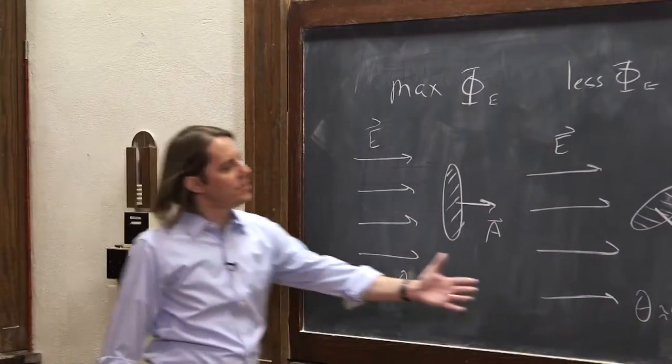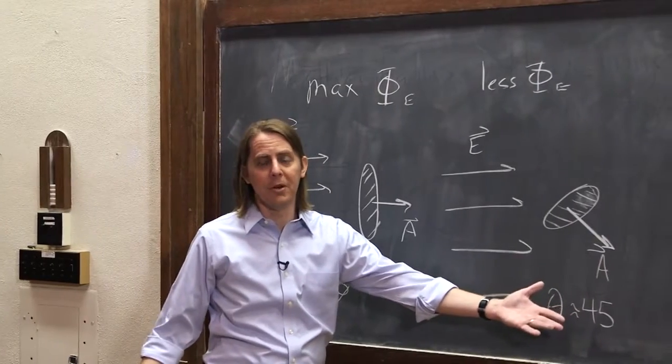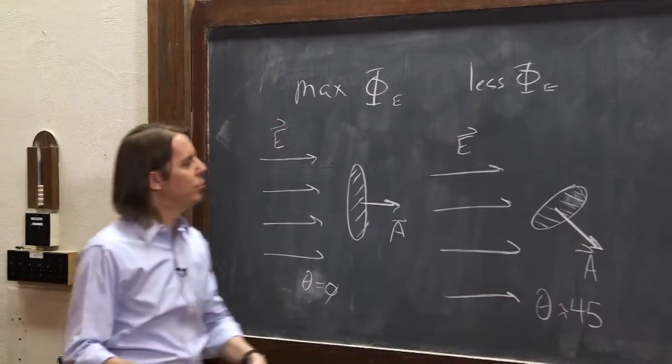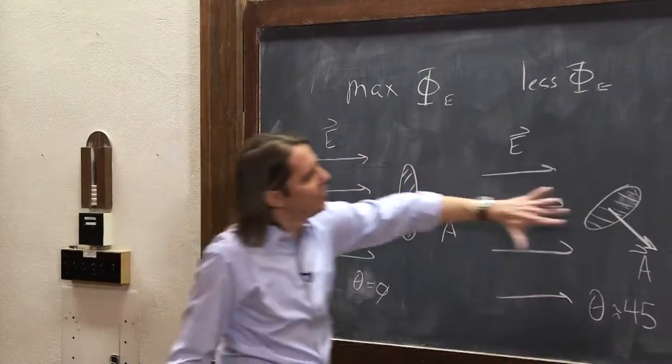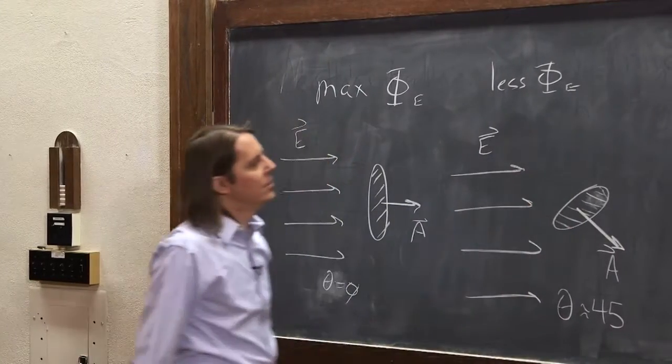Then you're not going to get as large of a flux because the cosine of 45 is less than 1, square root of 2 over 2. And you can also see, yes, less field would go through because it's at an angle.